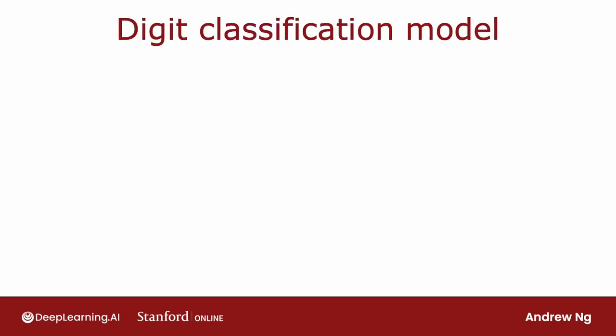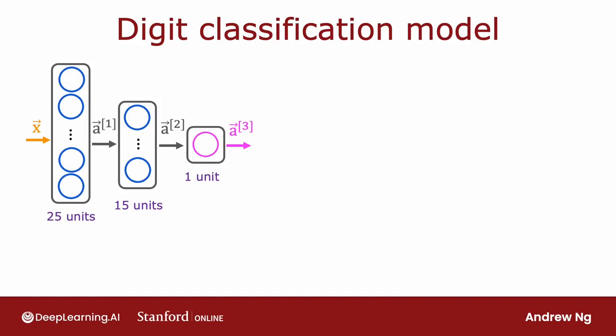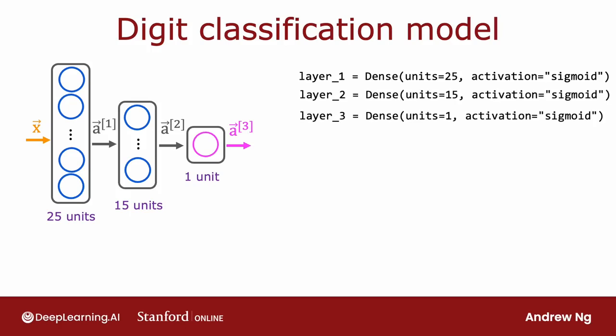Let's redo this for the digit classification example as well. So previously, we had x is this input, layer 1 is the layer, a1 equals layer 1 applied to x, and so on through layer 2 and layer 3, in order to try to classify a digit.